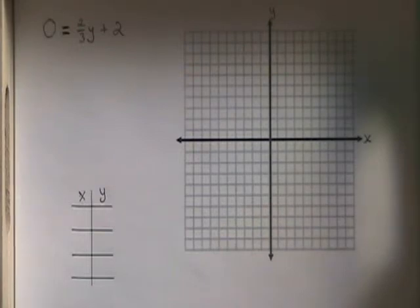This video will illustrate how to graph horizontal and vertical lines. The equation for a horizontal or vertical line has only one variable, x or y, instead of having both.